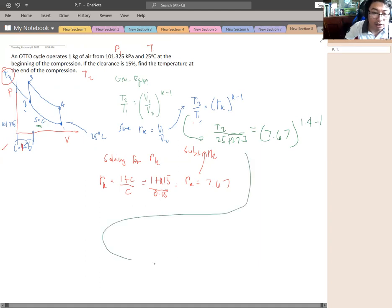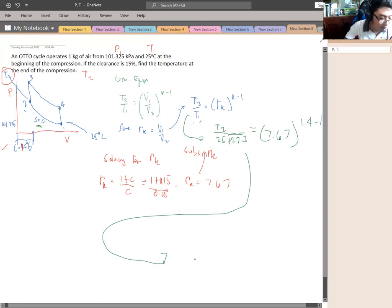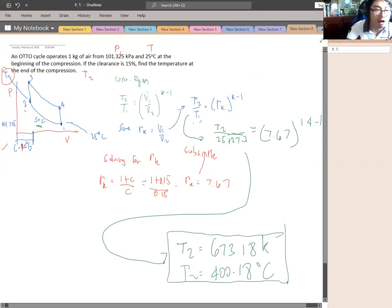1.4 minus 1. So therefore the answer is to Celsius, it is 618.18 K or 400.18 degrees Celsius. This is our answer. This is the answer for our T2.